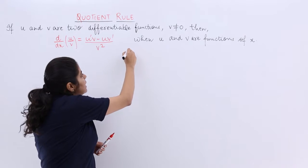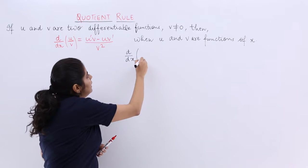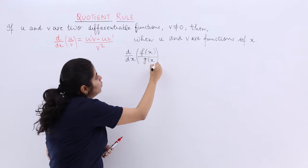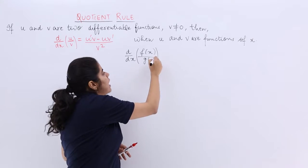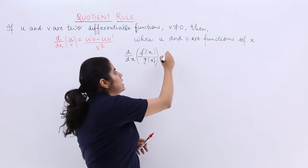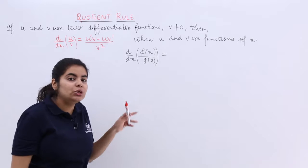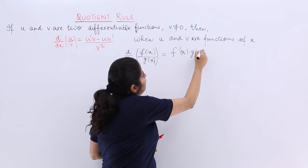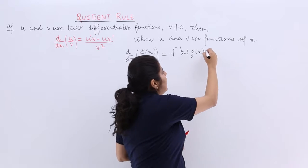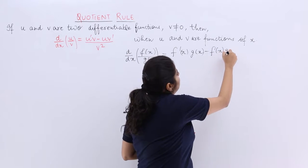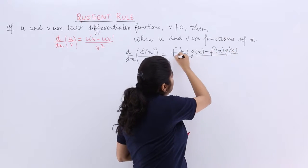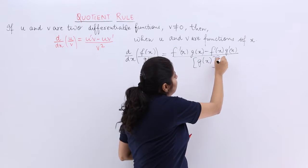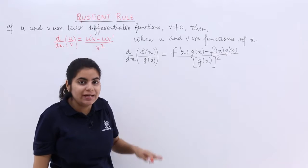That means it is the case such that d by dx of f(x) upon g(x) where u represents your f(x) and v represents your g(x). Then it will be what kind of a formula? u dash v minus u v dash whole upon v square, and v square means you do not have to take the differentiation of the denominator.